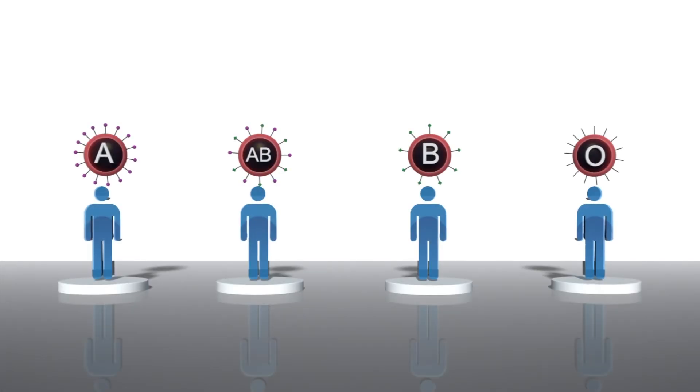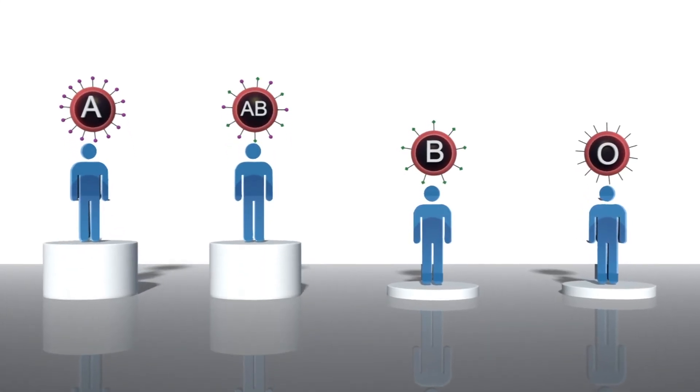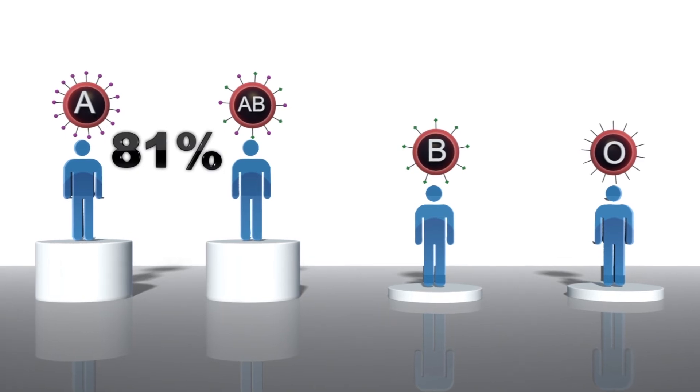After five days, 81% of the type A or AB volunteers developed moderate to severe diarrhea compared to about half with blood types O or B.